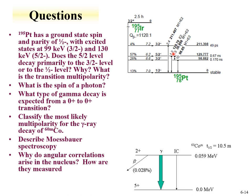Although the five-halves minus to one-half minus transition has a larger spin change, there's also a larger energy change, making it relatively abundant in comparison. From the table of isotopes, the 30.8 keV transition with relative intensity 1.3 is an M1+E2 transition, while the 130 keV transition is an E2 type transition.